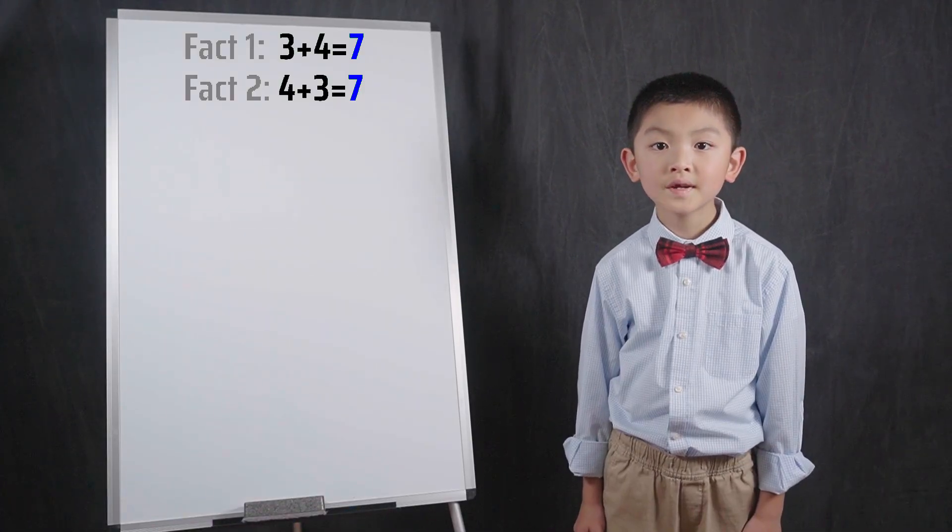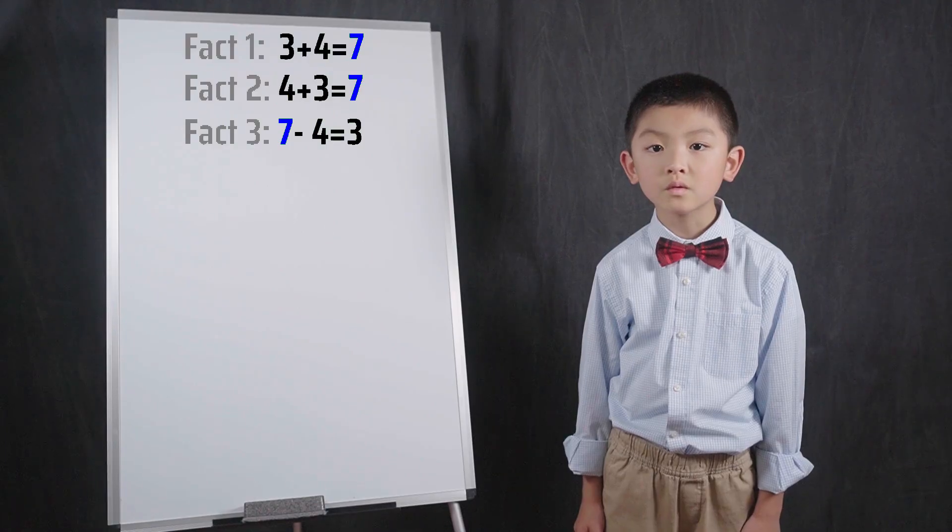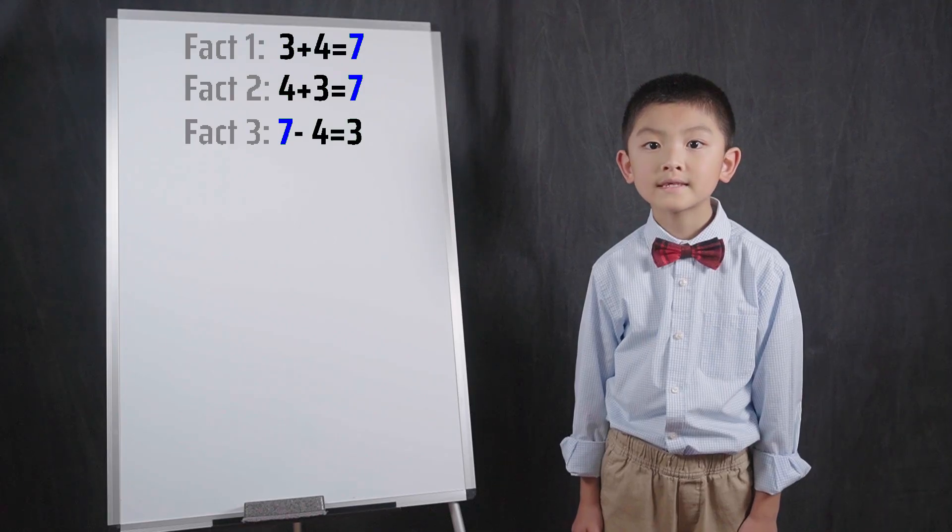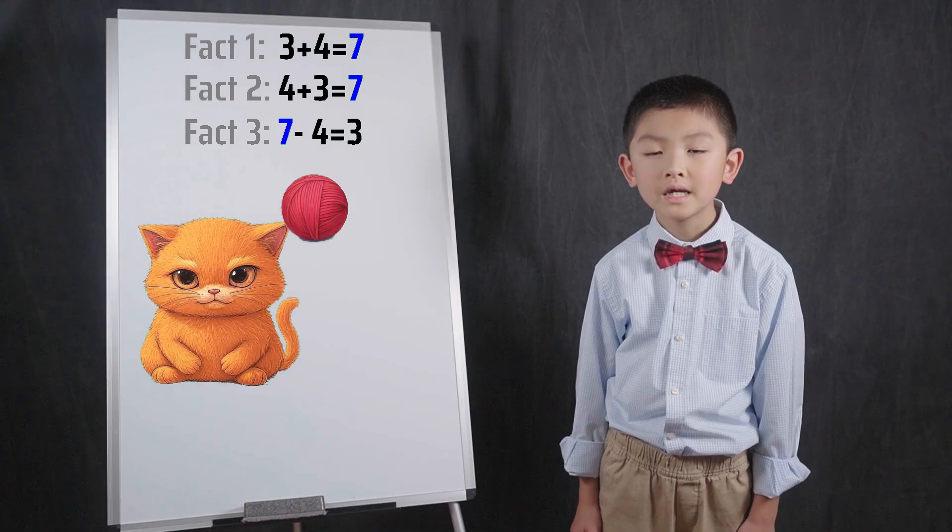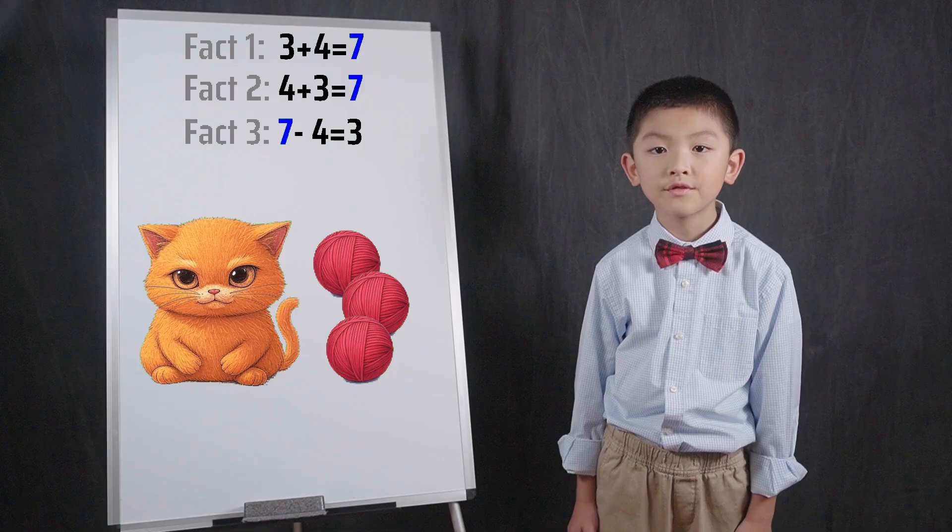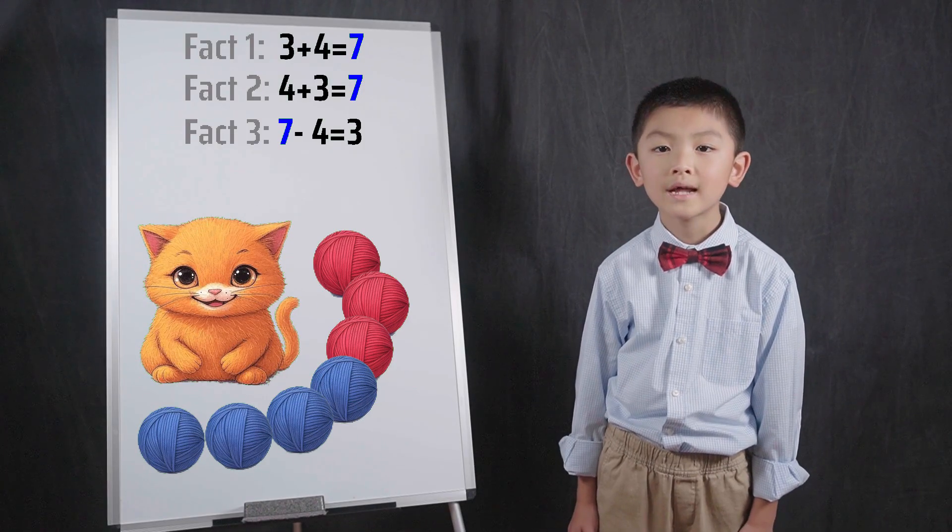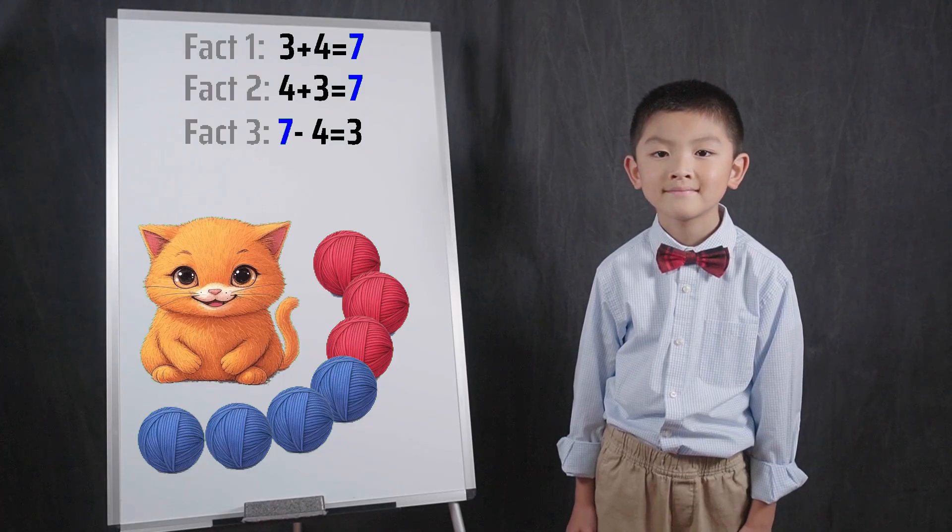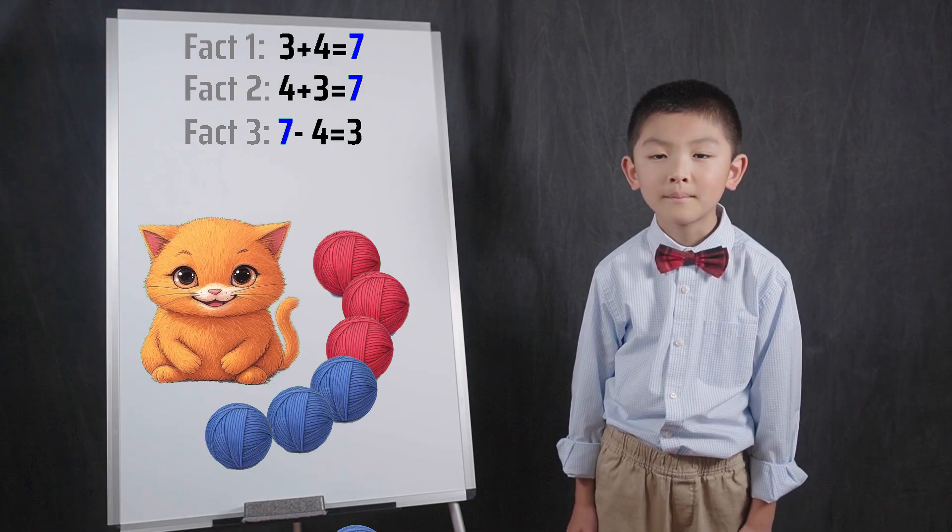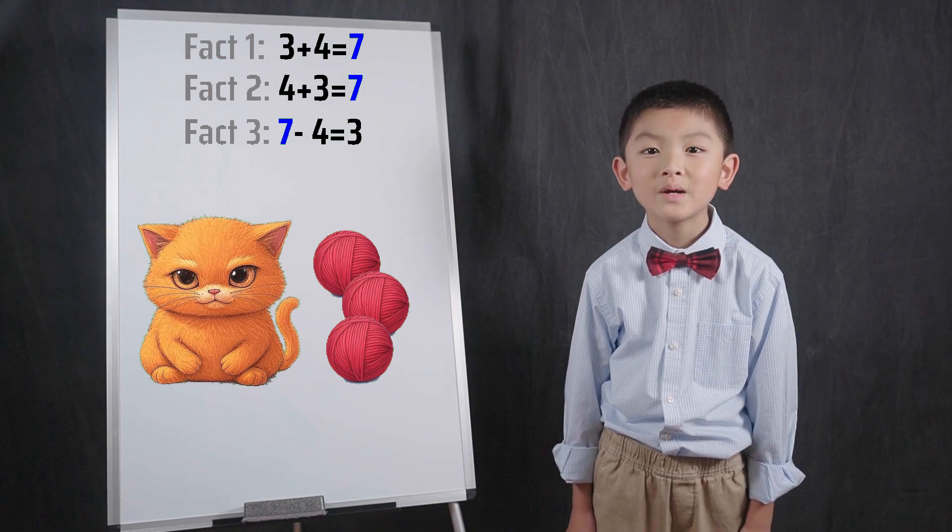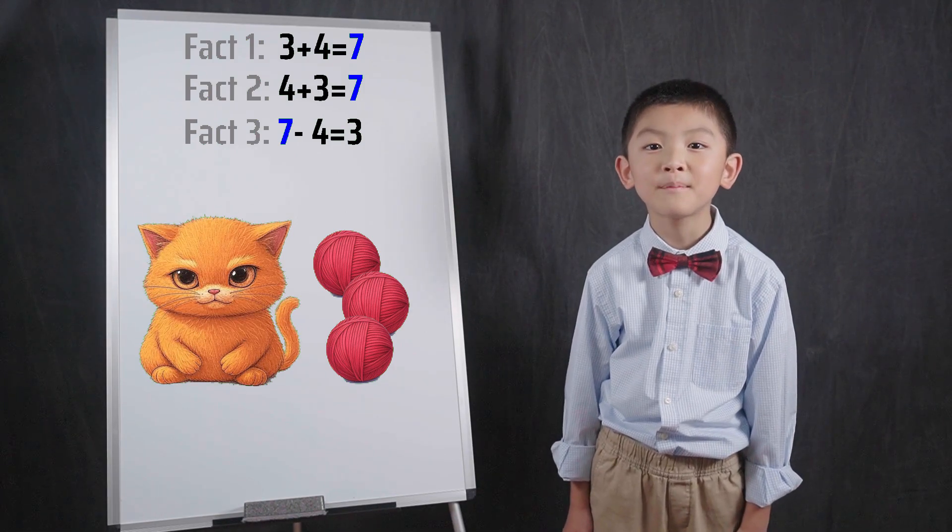Fact 3 is 7 minus 4 equals 3. If 3 plus 4 equals 7, then it must follow that 7 minus 4 equals 3. Imagine a cat starts with 3 balls. He then gets another 4 balls. In total, he would have 7 balls. Now imagine if he lost 4 balls. Logically, he would go back to just having 3 balls.